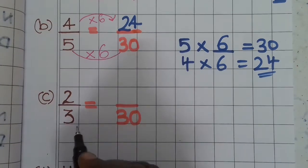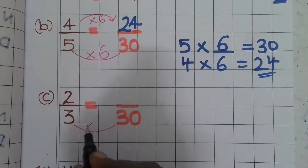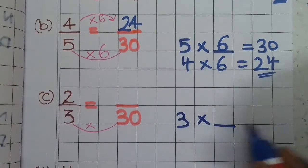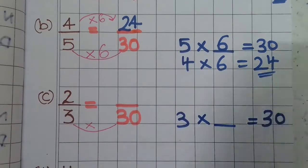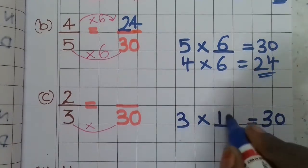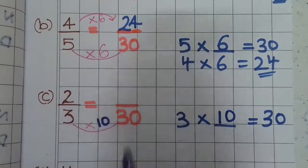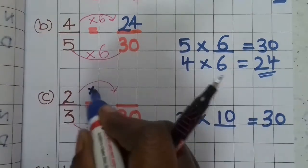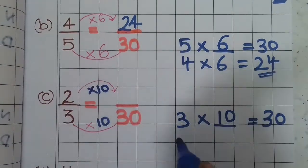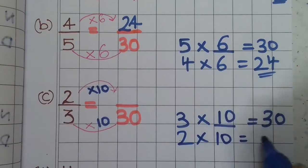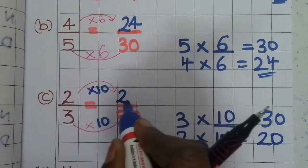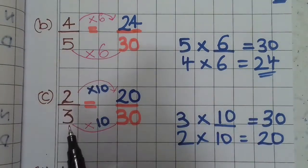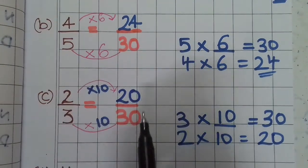If the denominator is increasing toward 30, use the multiplication sign. Multiply by 3: 3 times 10 equals 30. So multiply by 10. That means the numerator is also multiplied by 10. So 2 into 10 equals 20. The numerator is 20. The answer is 20 by 30. So for the fraction 2 by 3, the equivalent fraction is 20 by 30.